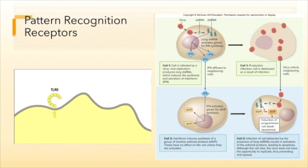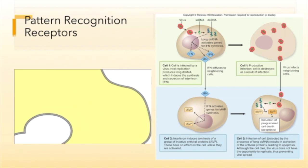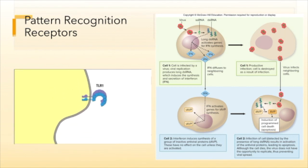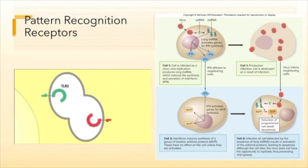Each TLR family member recognizes different PAMPs. TLR5 recognizes flagellin, a conserved constituent of the bacterial flagellum. TLR9 recognizes unmethylated CpG oligonucleotide motifs from bacterial genomes after degradation in the lysosome. TLR6 and TLR2 form a dimer that recognizes diacyl lipopeptides. TLR1 and TLR2 form a dimer that recognizes triacyl lipopeptides. TLR4 recognizes lipopolysaccharide (LPS), a component of gram-negative bacteria. TLR3 and TLR7 are on endocytic vesicles and recognize double-stranded RNA and single-stranded RNA, respectively.